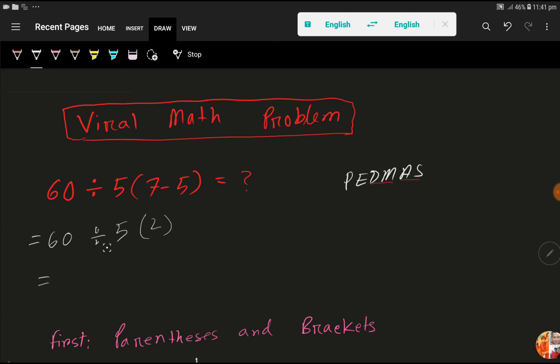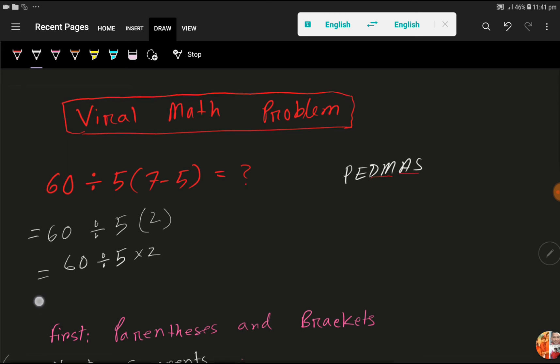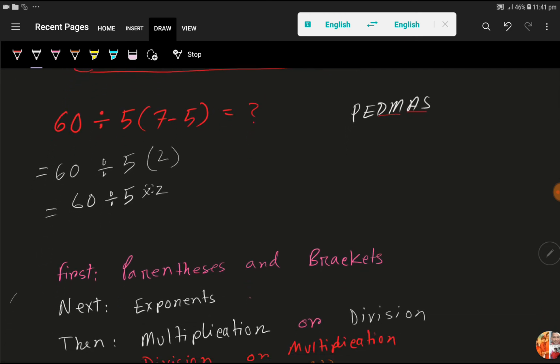Then we'll work on, look, 60 divided by, if you discard this parenthesis, then you have to use this multiplication sign, right? Many, many students, what will happen? If you work on this multiplication, then you will get the wrong answer. So you have to work from left to right.